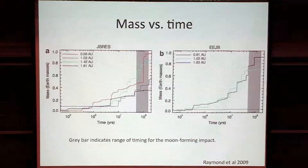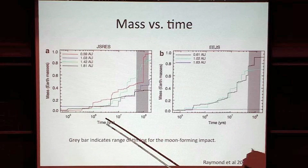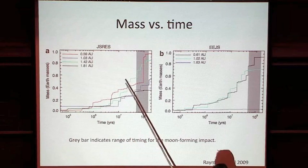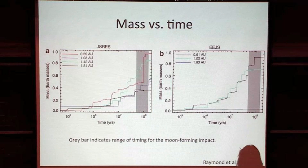Here's some mass versus time plots from that same paper on a log time axis. The gray bar shows the range of times for moon formation — they're looking for a giant impact in that time window. The growth profiles have jumps corresponding to giant impacts, and sometimes more slow growth from planetesimal accretion. Now looking at it on a linear x-axis, it looks like an exponential. The timescale is about right for what people know of core formation time and the last impact.